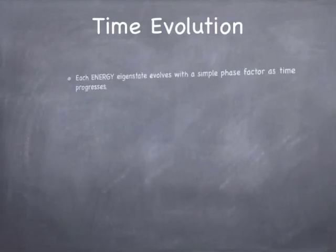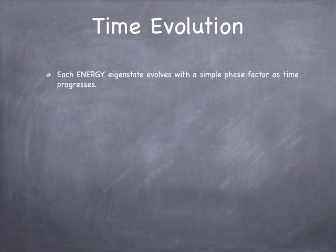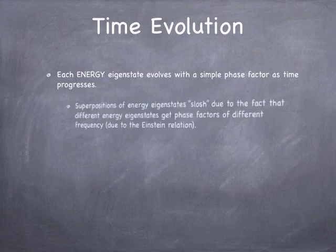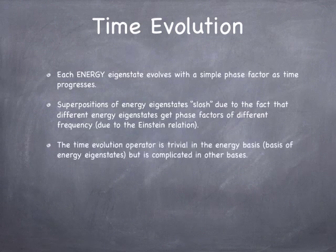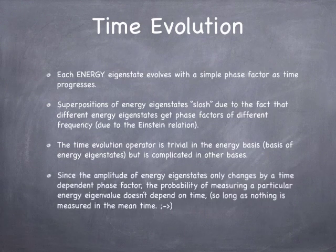Time evolution is something we've been doing all semester — nothing new here, just stated in slightly more formal terms. Each energy eigenstate evolves with a simple phase factor as time progresses; you multiply each energy eigencomponent by e to the minus i omega t. If you have a superposition of energy eigenstates, the expectation values of other observables are going to slosh due to the fact that different energy eigenstates get phase factors of different frequency because of the Einstein relation. The time evolution operator is trivial in the energy basis but complicated in other bases. Since the amplitude of energy eigenstates only changes by a time-dependent phase factor, the probability of measuring a particular energy eigenvalue doesn't depend on time — the amplitude of each energy eigenstate component is constant as long as you don't measure anything else.